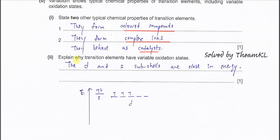Part 2. Explain why transition elements have variable oxidation states. Because the d and s subshells are very close in energy. How? Just use vanadium as an example.